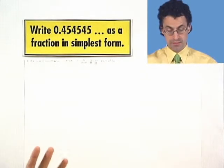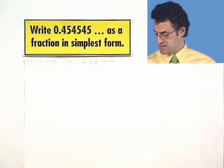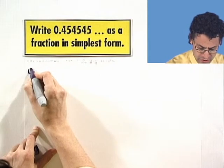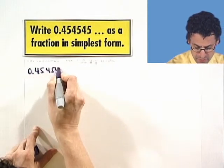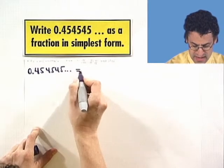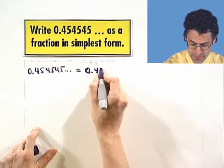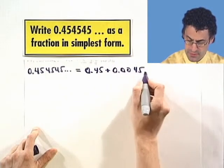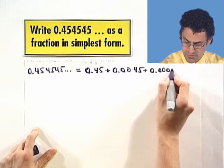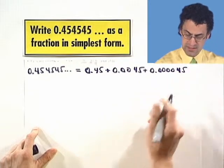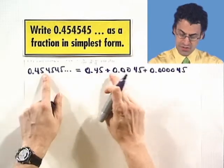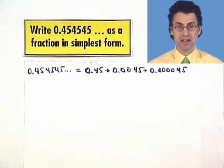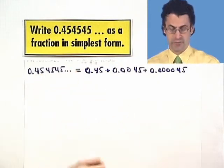We can actually do that by using this notion of infinite geometric series, because I can express that as an infinite series. So 0.454545 forever is actually equal to, let's take it in pieces, 0.45 plus 0.0045 plus 0.000045. You see what I'm doing? I'm just replacing all these earlier terms with zeros, so when I add them all together, there's no carrying at all. Everything just comes down, and we get 45454545 forever.